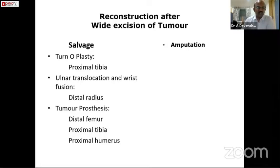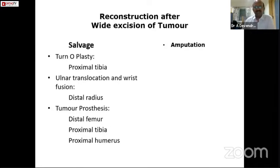Tumor prostheses can be used in situations where the distal femur, proximal tibia, and proximal humerus are involved. Amputation, when the lesion is quite extensive and it is not possible to salvage the limb, is also a form of preventing recurrence.